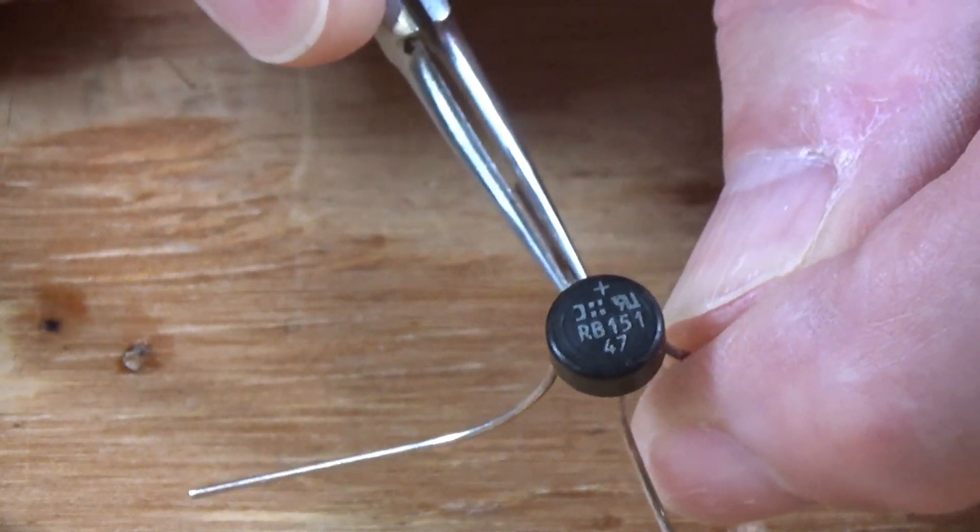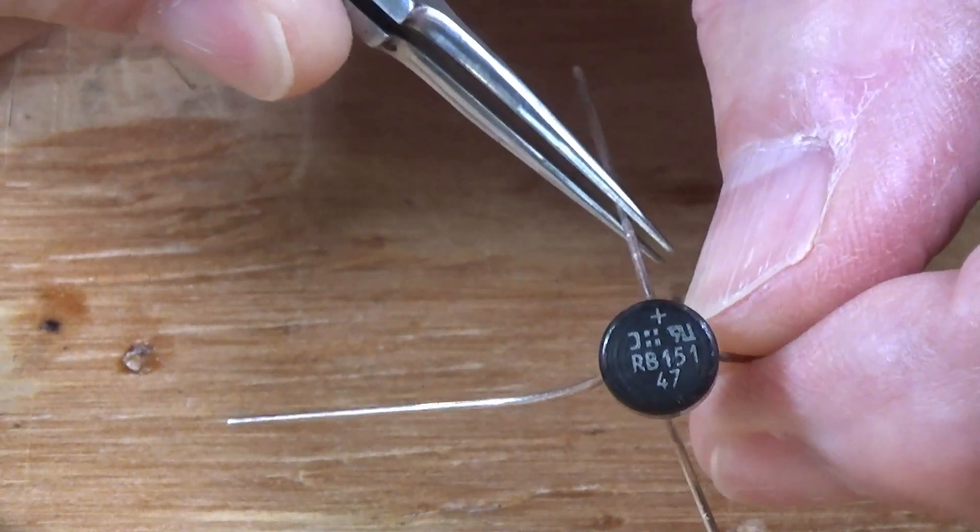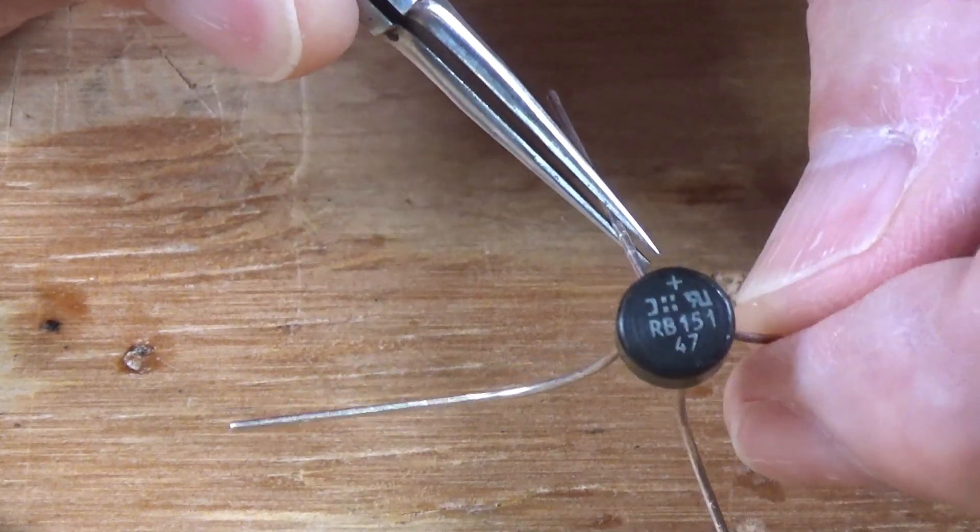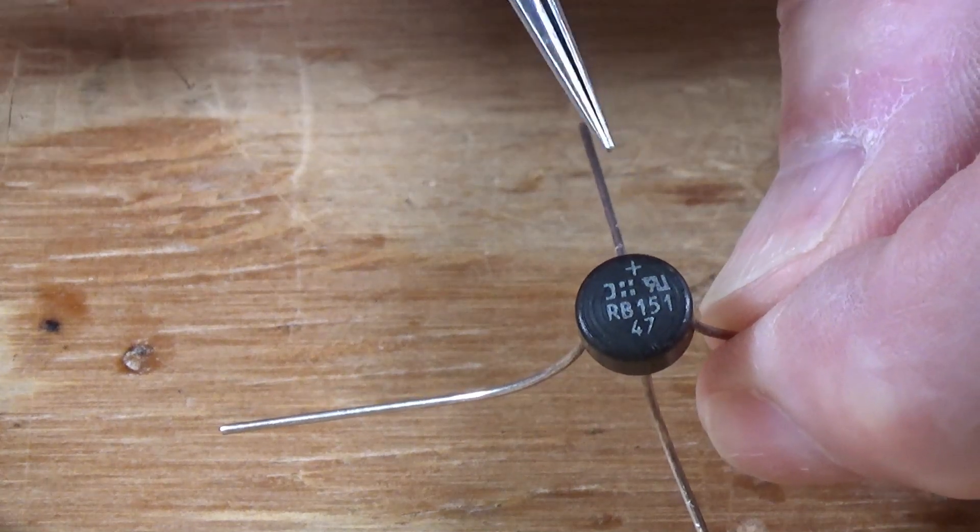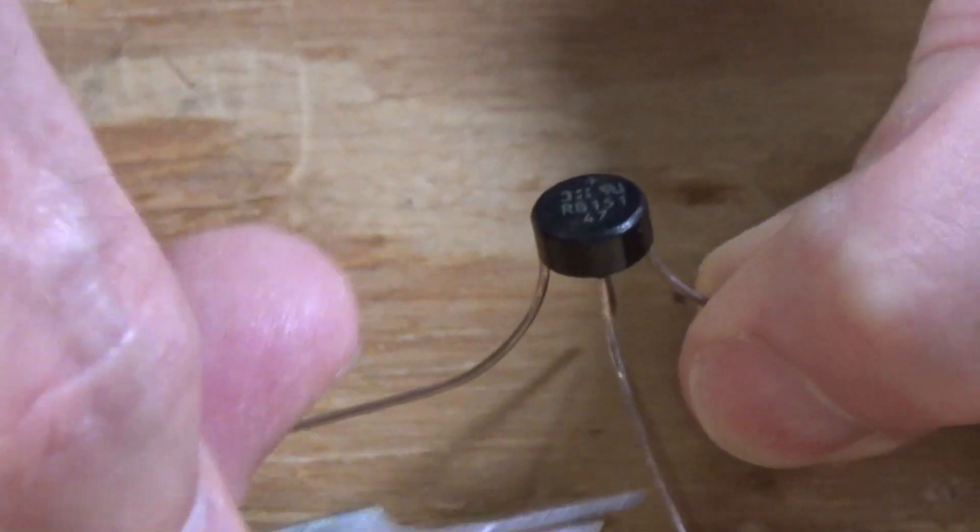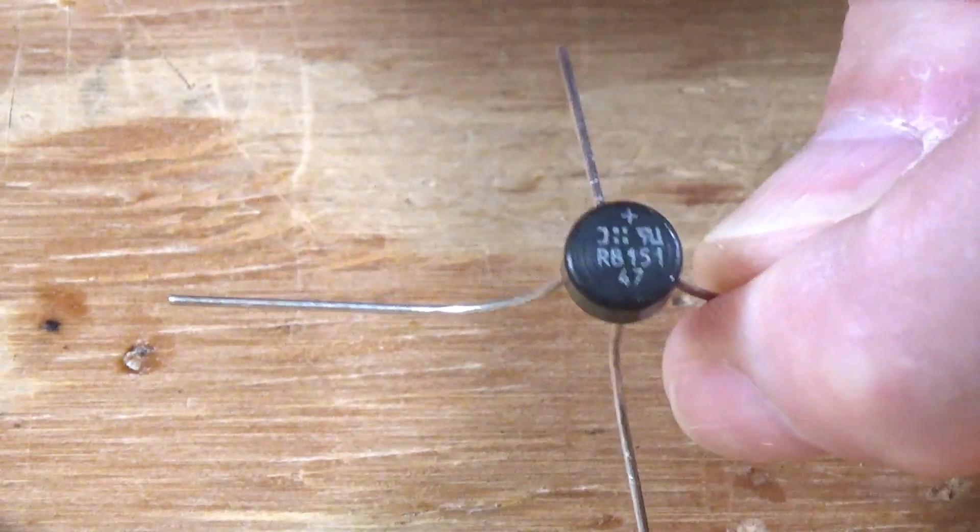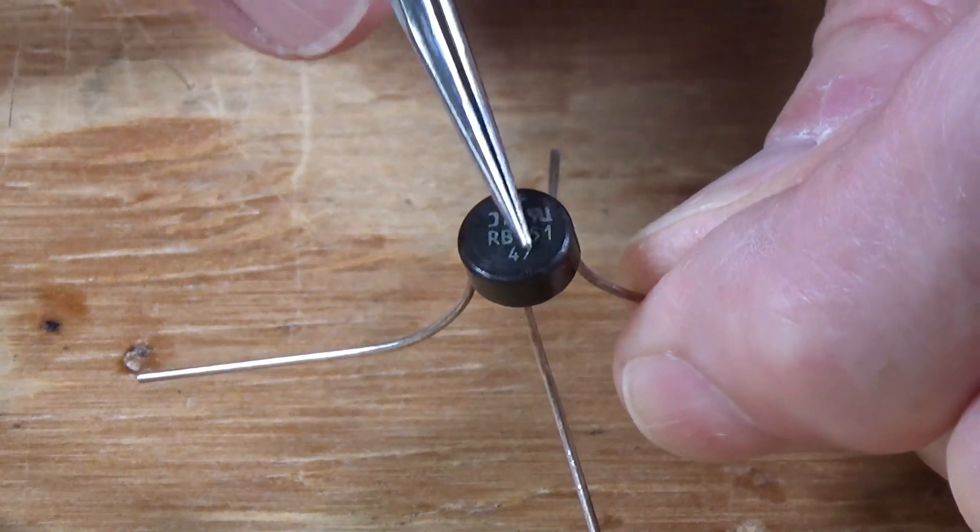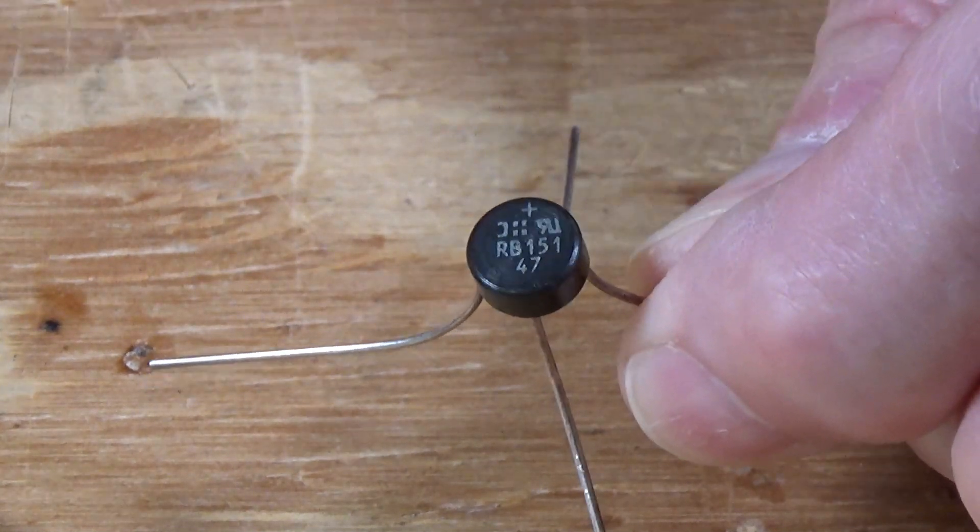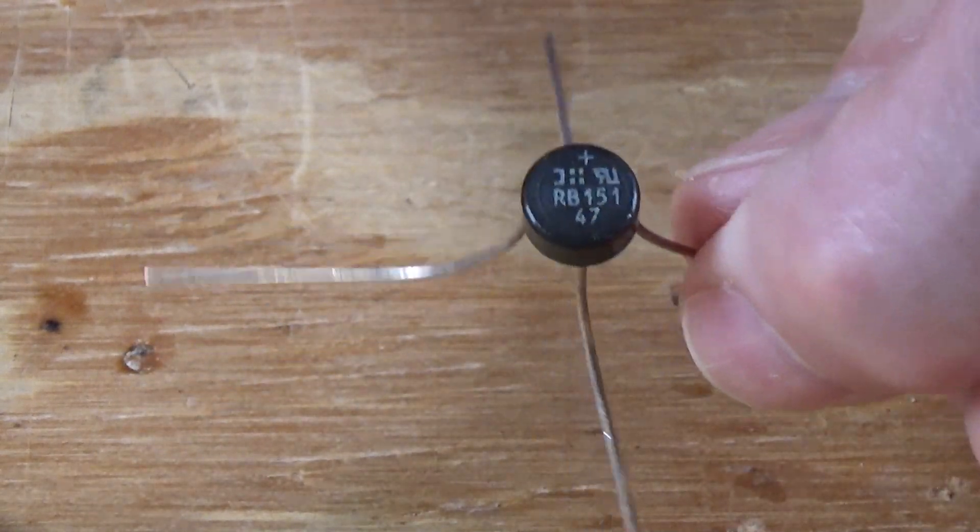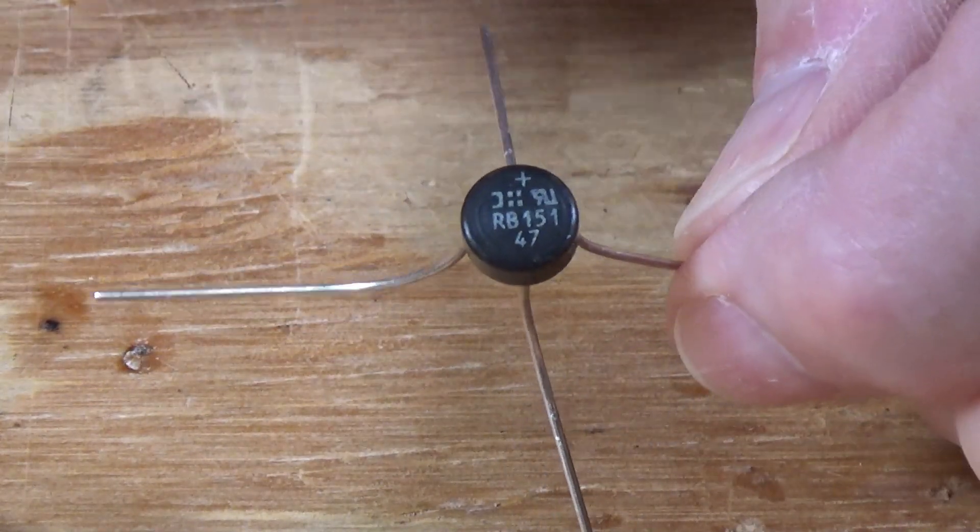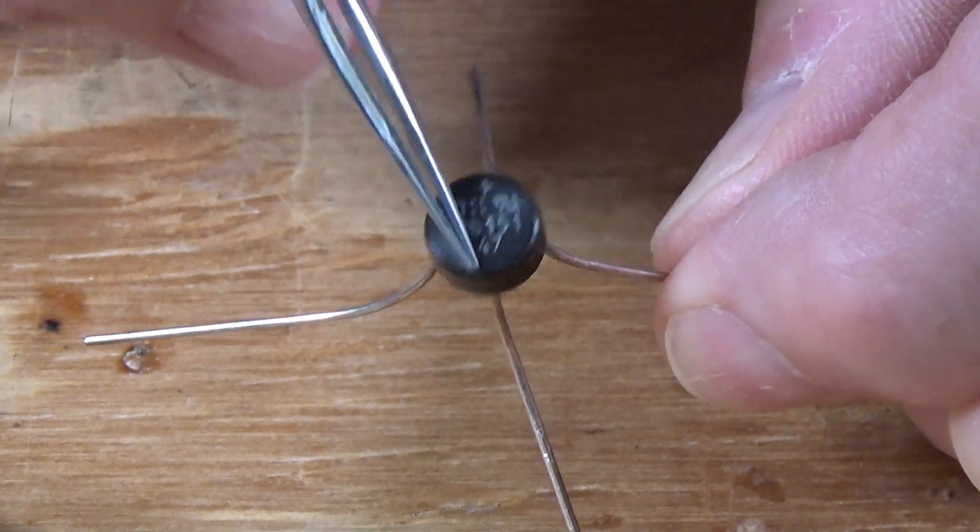Now that indicates that this leg right here that I'm holding and wiggling, that's the positive leg. 180 degrees across from that right here is the negative leg or the negative lead. So you've got a plus and a minus. And those are very important because everything with LEDs is polarized. You have to observe the proper polarity with positive and negative.